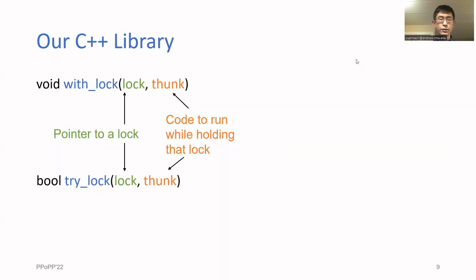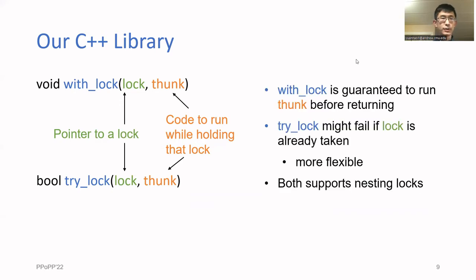The library we implement provides two main functions, withLock and tryLock. For both functions, you pass in a lock and also a thunk to run while holding the lock. A thunk is basically just a function without any arguments. Requiring the critical section to be wrapped in a thunk is very useful for our implementation. The difference between these two methods is that withLock is guaranteed to successfully run the thunk before returning, whereas tryLock is allowed to fail and return false if it sees that the lock has already been taken.